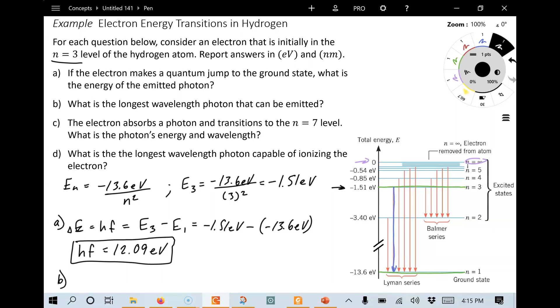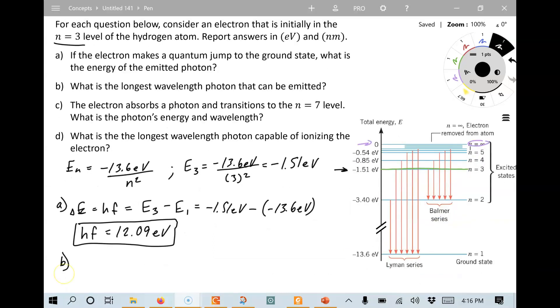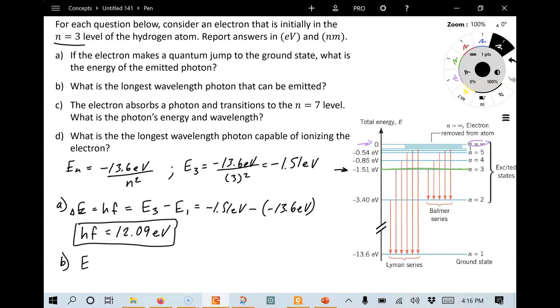Part B asks us, what is the longest wavelength photon that can be emitted? So let's erase these ones here. Now, for part B, we're looking for the longest wavelength. Now, we've got to go back and think of Einstein's formula for the energy of a photon. We just wrote it up there above. E equals HF, which is equal to Hc over lambda. And we can see that the longest wavelength is going to be the one with the least energy, so the least energetic photon.